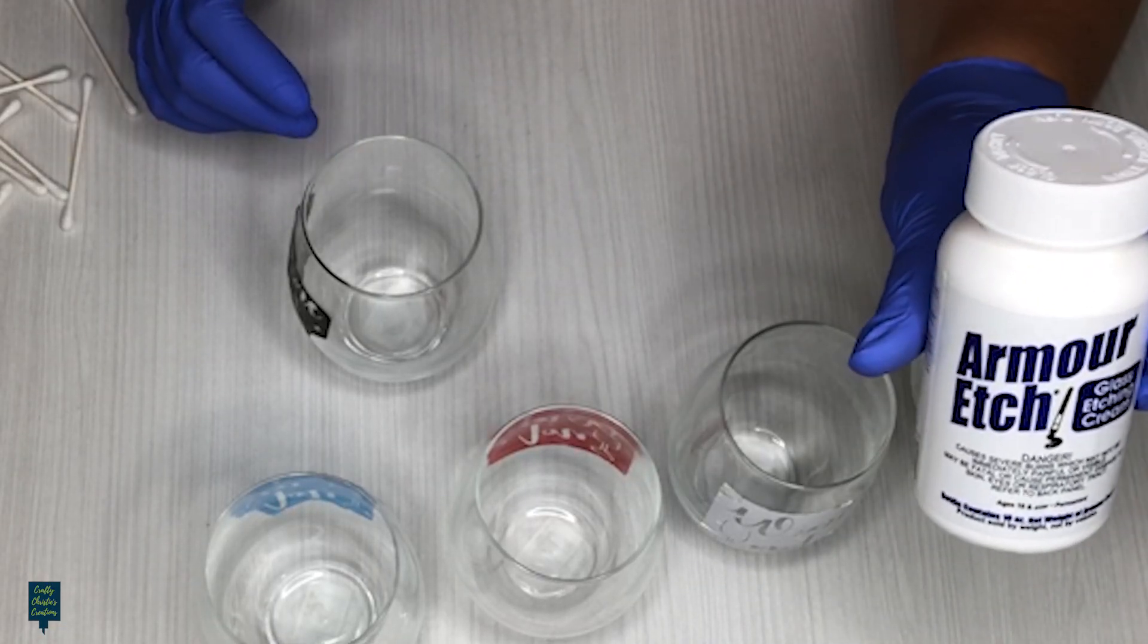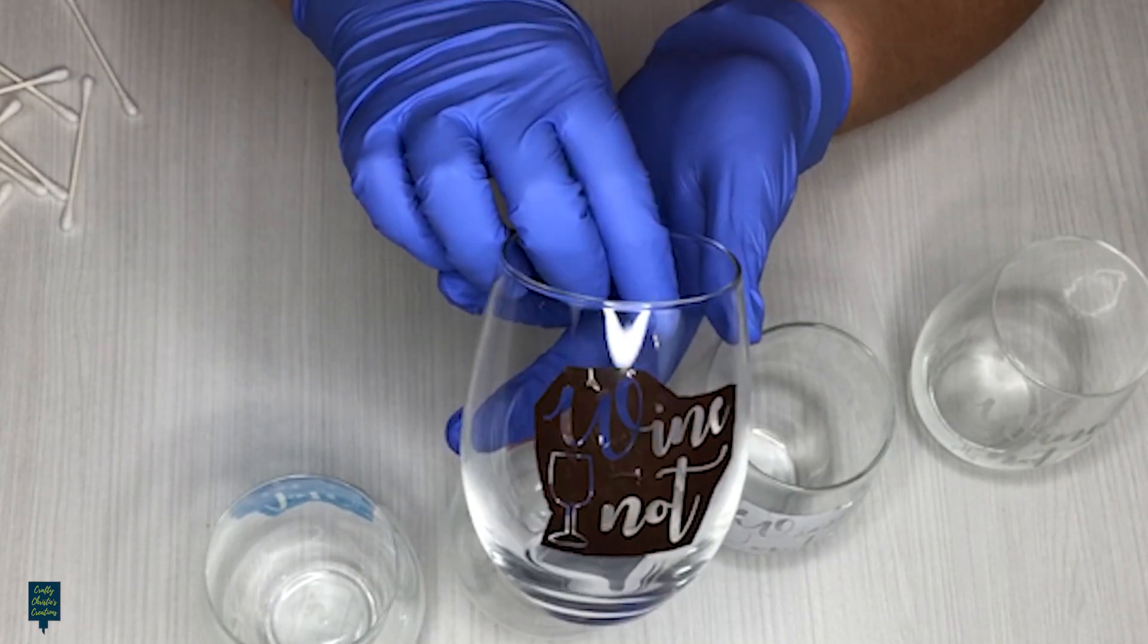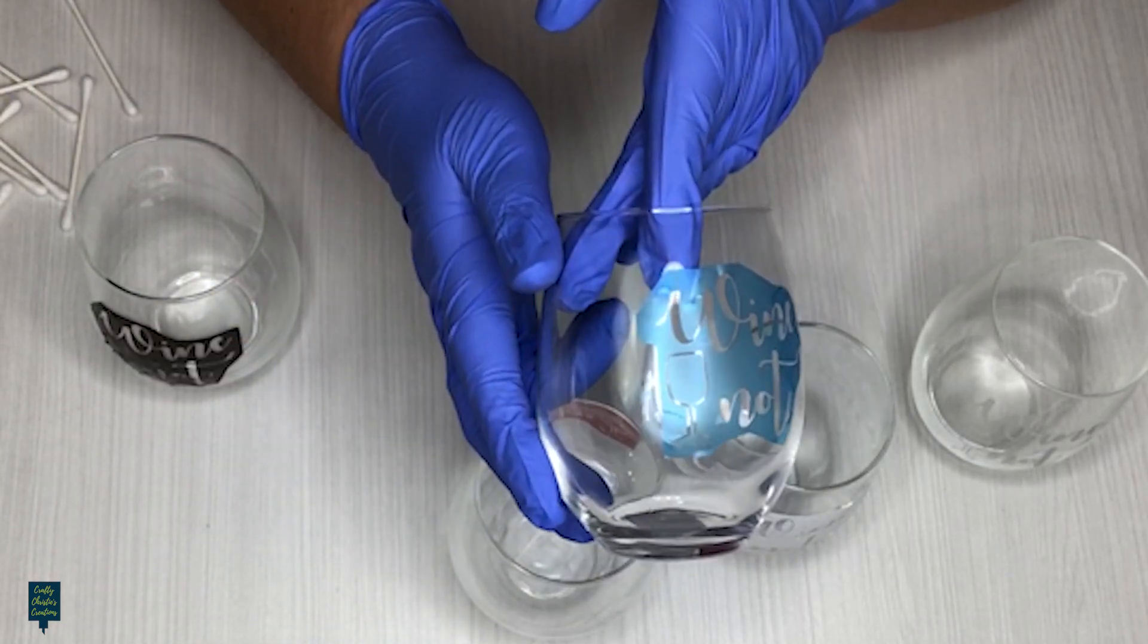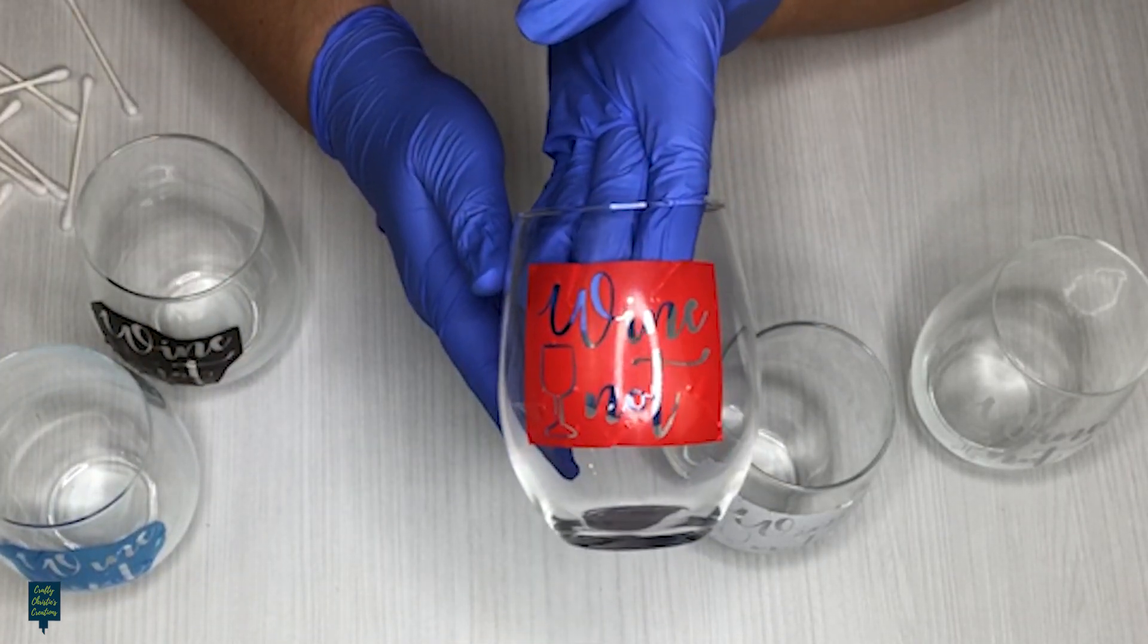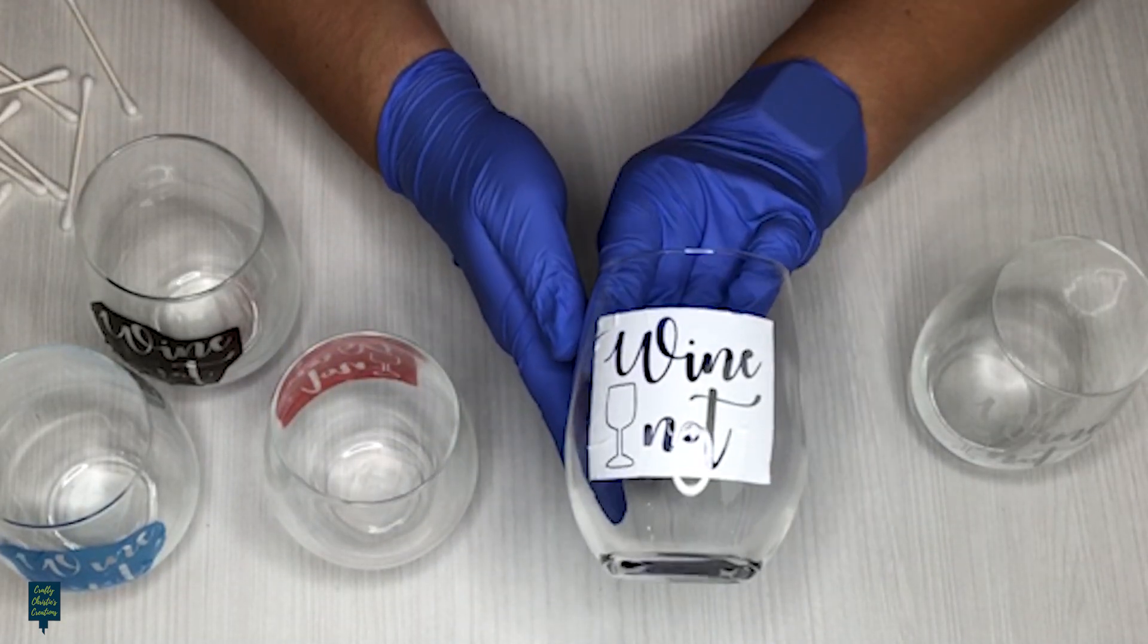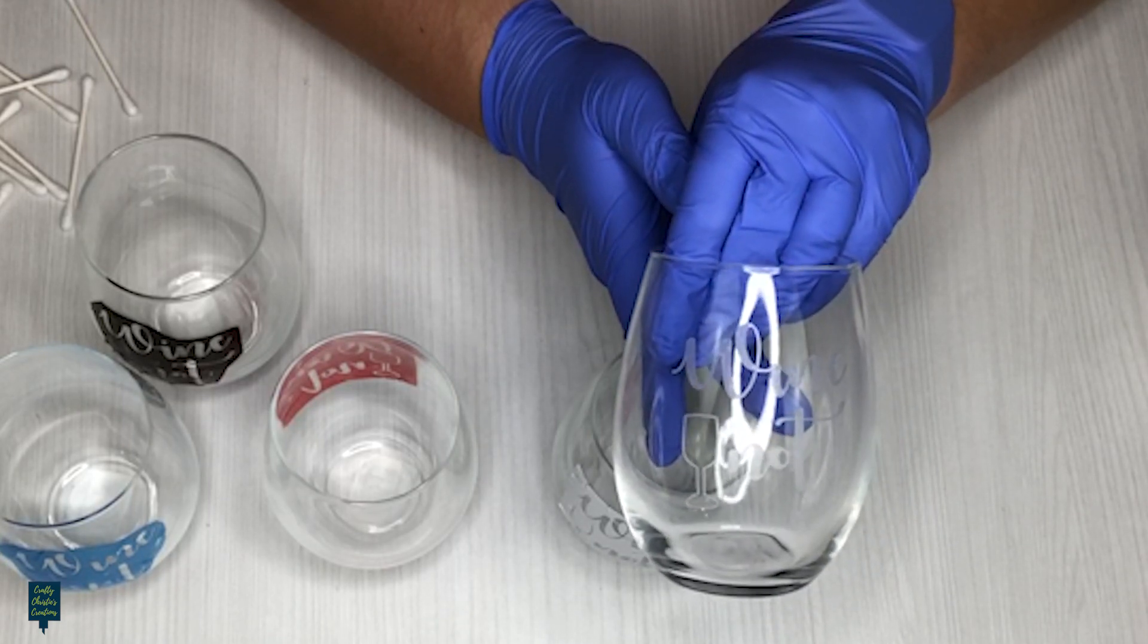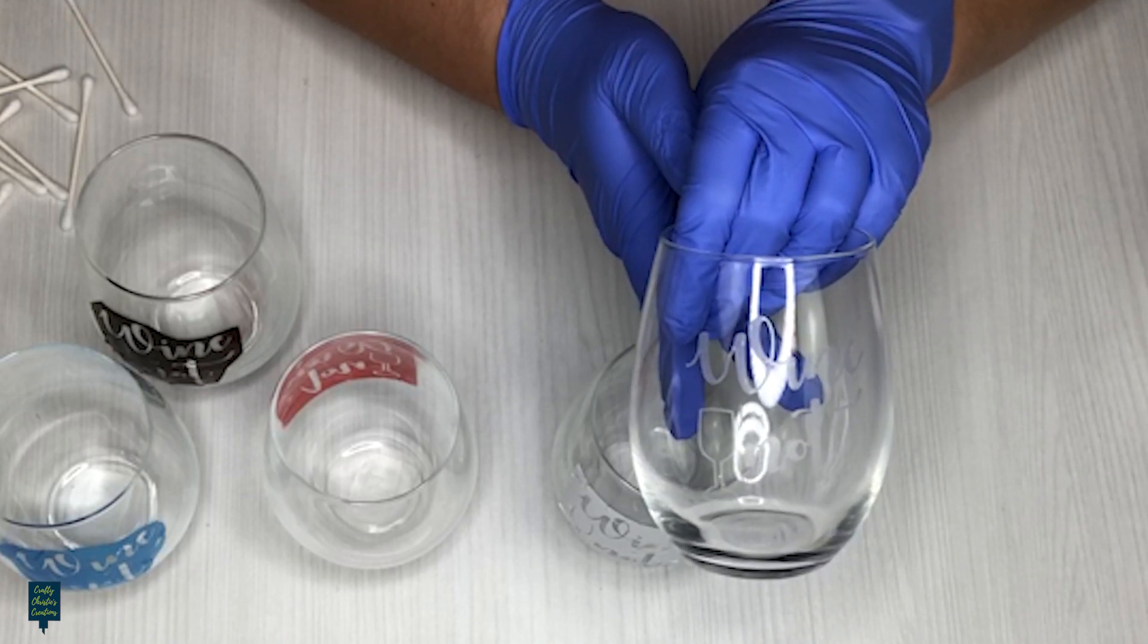Alright, I've got my Armor Etch cream here, and this one here is permanent Oracal 651 permanent vinyl. We've got the Oracal mask stencil vinyl. I've got Dollar Tree permanent vinyl, Oracal 631 temporary vinyl, and then we're going to measure them all against the Dollar Tree glass etching vinyl. So let's see what they end up looking like.